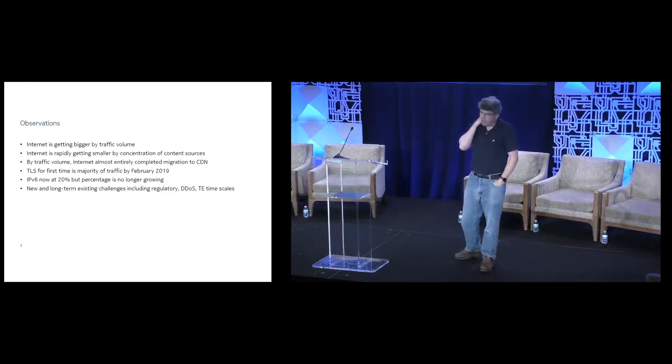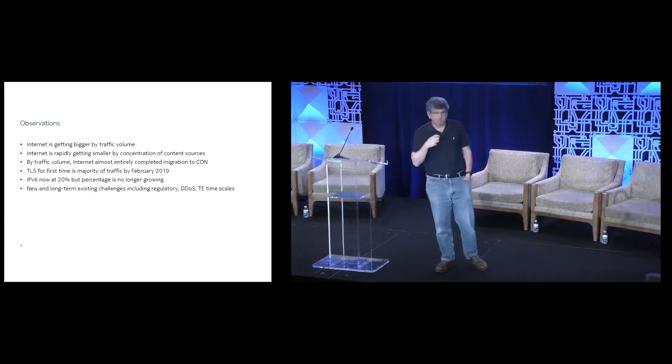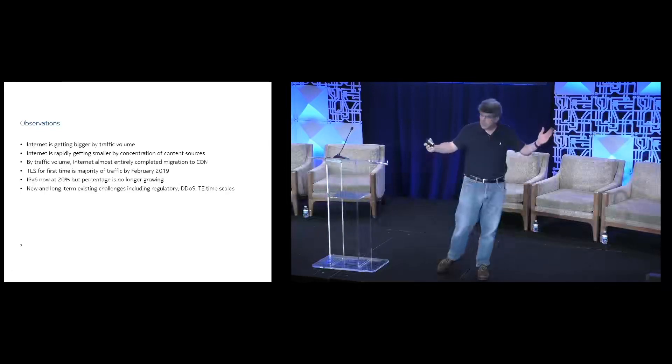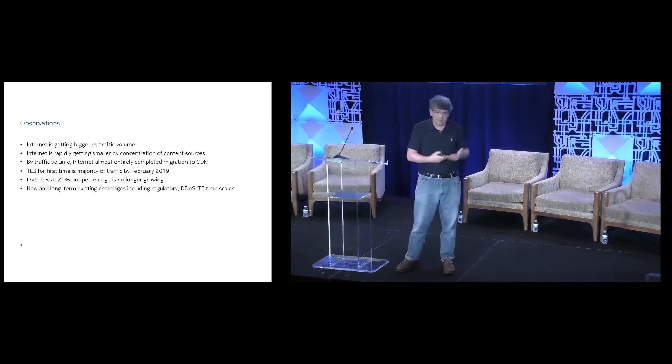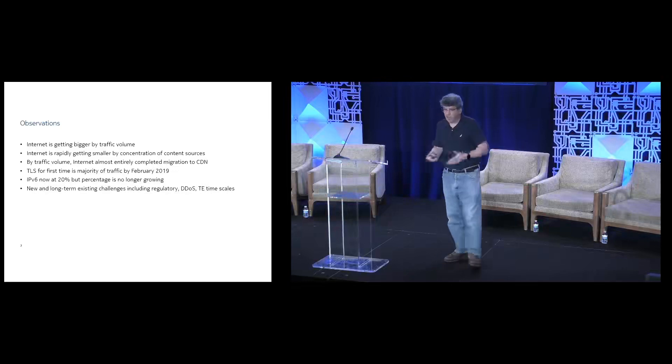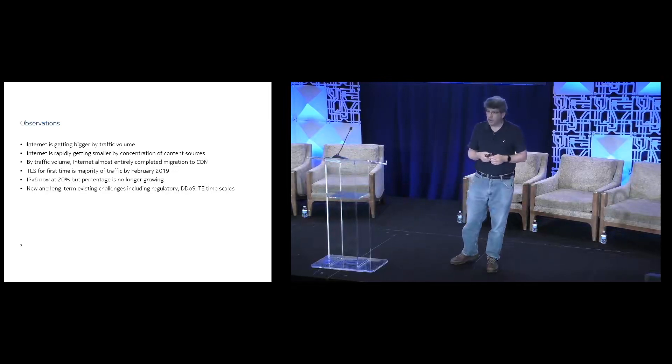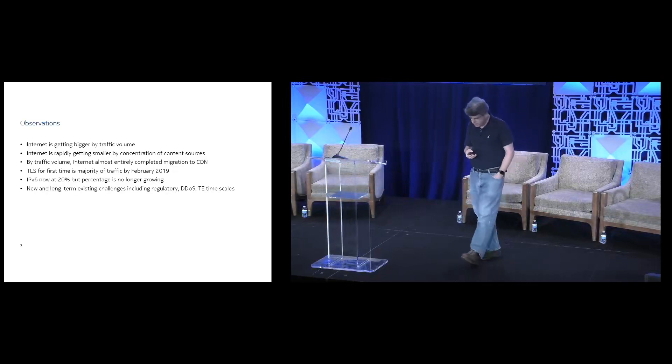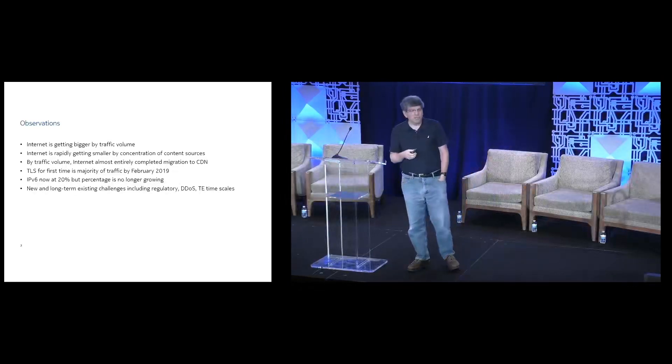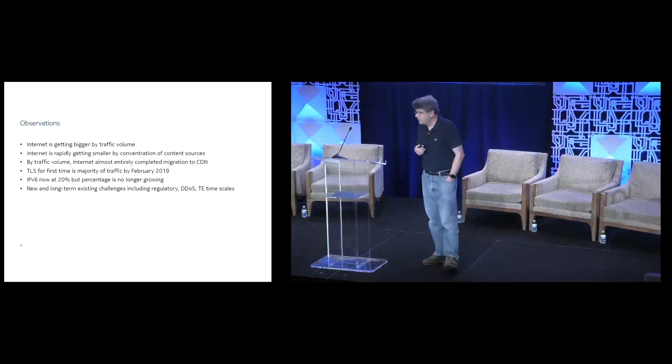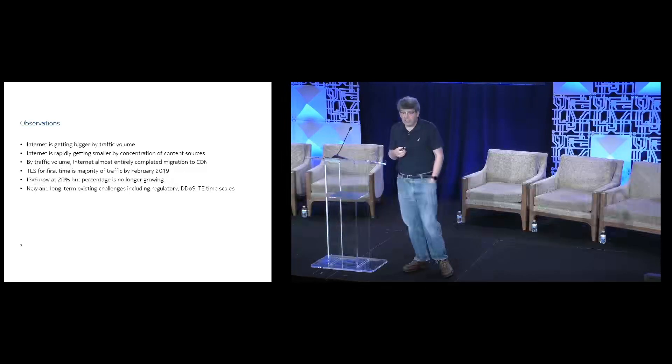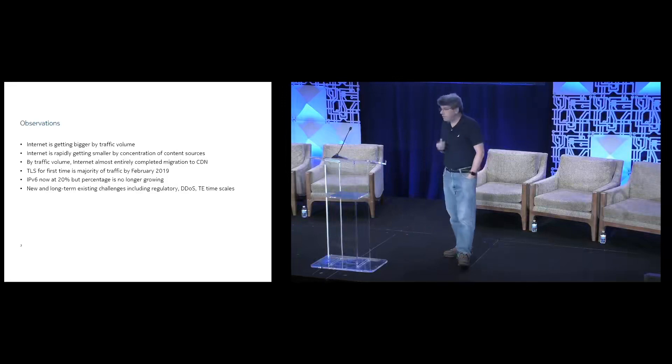One of the observations, of course, is not particularly revelatory. The internet is getting bigger and is getting bigger rather quickly by traffic volume. Depending what you count, 40 to 50 percent sort of annualized year over year. And this is across the board, across the world, though there are regional and provider variants. The other thing that's happening, as the internet traffic volume grows, the number of sources, the number of unique ASN, the number of BGP prefixes, the number of hosting and cloud providers is shrinking almost as rapidly.